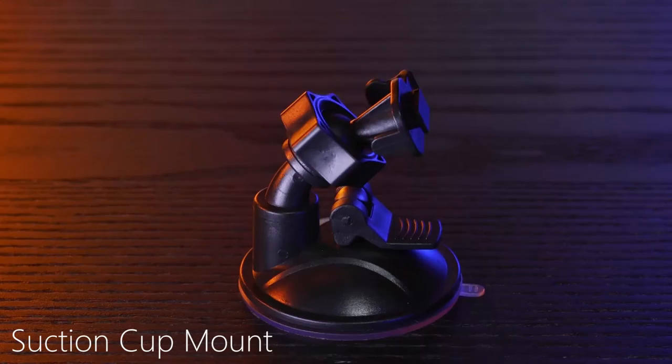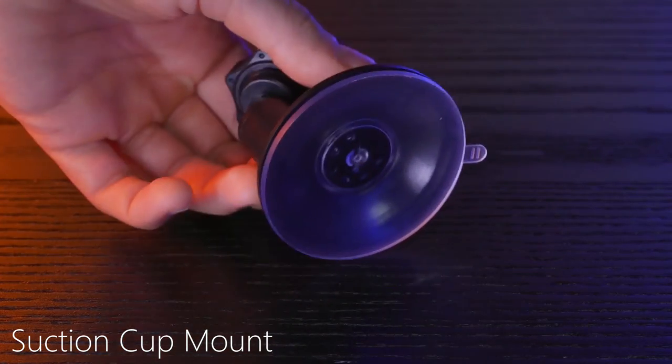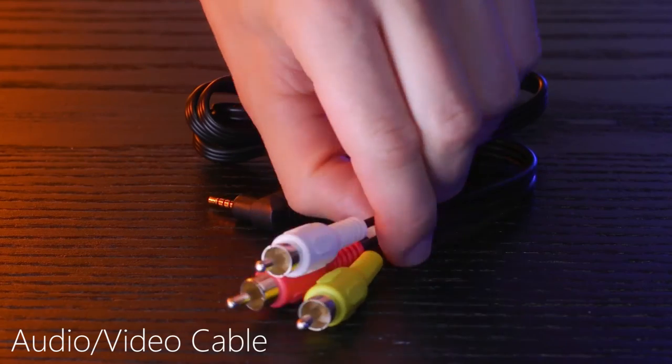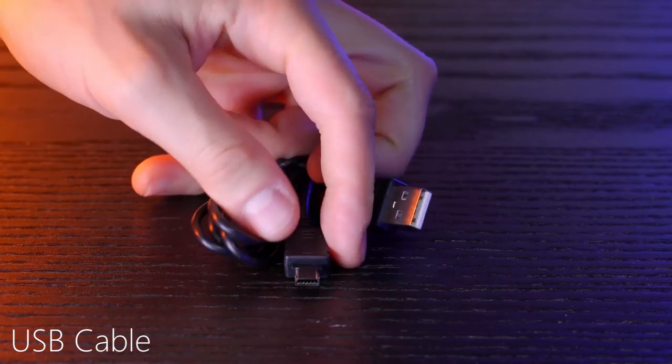The dashcam plus 2 is extremely easy to install. It comes with a suction cup mount, cigarette plug car charger, GPS antenna, audio video cable, USB cable, and a 32 gigabyte micro SD memory card.